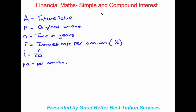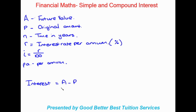Before we move on to equations, here's a basic principle: working out the amount of interest. If they give you a future value and an original amount, the way to work out interest is: Interest = A (future value) minus P (original amount). You take the money at the end of the investment minus the original amount invested, and that gives you your total interest earned.